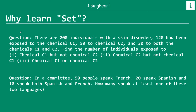Let's take a look at some more types of questions. There are 200 individuals with a skin disorder or some sort of a skin condition. 120 had been exposed to chemical C1, 50 have been exposed to chemical C2, and 30 to both C1 and C2. Find the number of individuals exposed to chemical C1 but not C2, chemical C2 but not C1, and the number of people exposed to chemical C1 or chemical C2. Isn't it quite fascinating that once we understand set theory, we will be able to answer these kinds of questions?